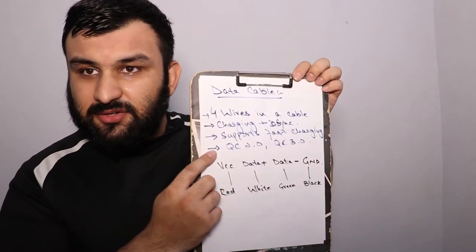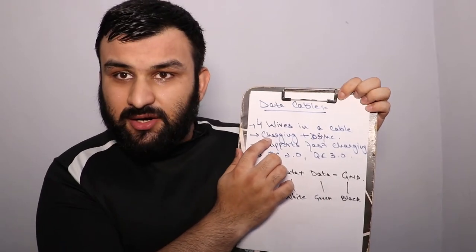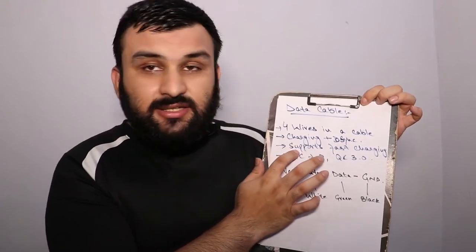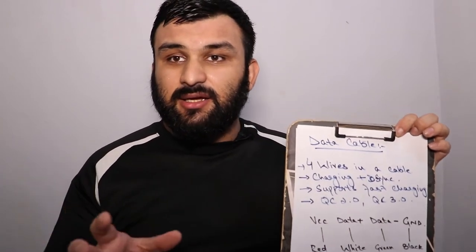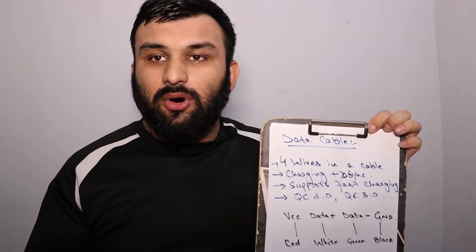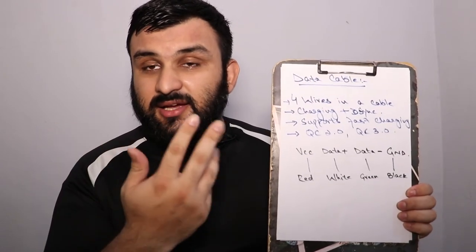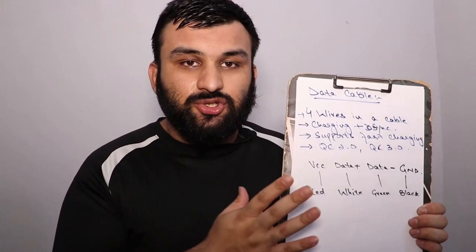So what is a data cable then? A data cable has four wires. Two of the wires handle charging and two handle data. They support fast charging — Quick Charge 2.0 and Quick Charge 3.0. In the Quick Charge 3.0 protocol, it uses VCC and ground as well as the data lines for fast charging; without those data lines, fast charging wouldn't work.